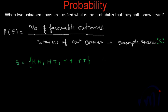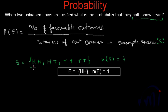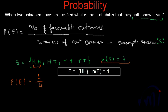How many total possibilities are there? The cardinal number of this set is 4 — that is the total possible outcomes. How many favorable outcomes do we have? Since we want both heads, there is only one favorable outcome. So P(E), the probability of getting both heads, is 1 divided by 4, which equals 0.25.